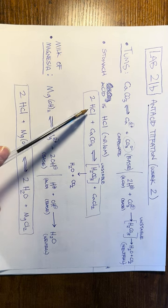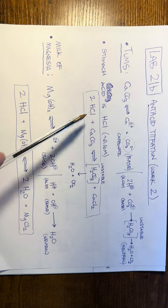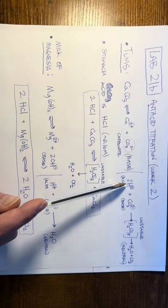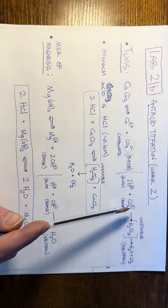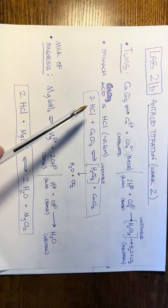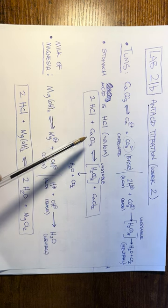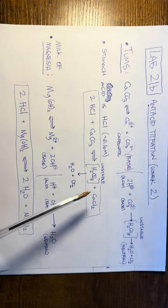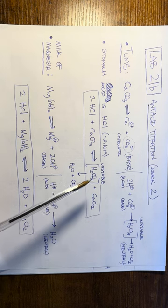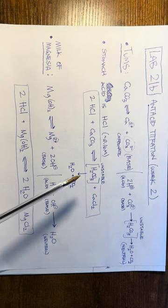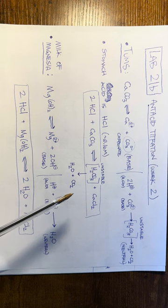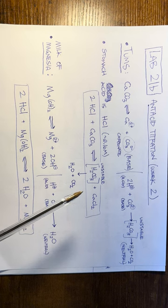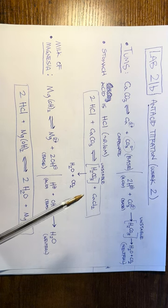If we have HCl in our stomach and we take a Tums, carbonate requires two moles of acid — two H⁺ — because it has a 2- charge. So we need two moles of HCl to react with one mole of calcium carbonate. That generates carbonic acid and calcium chloride. Carbonic acid is unstable and decomposes into water and CO₂. This is the full balanced reaction for what occurs when you eat a Tums — the neutralization of the acid.